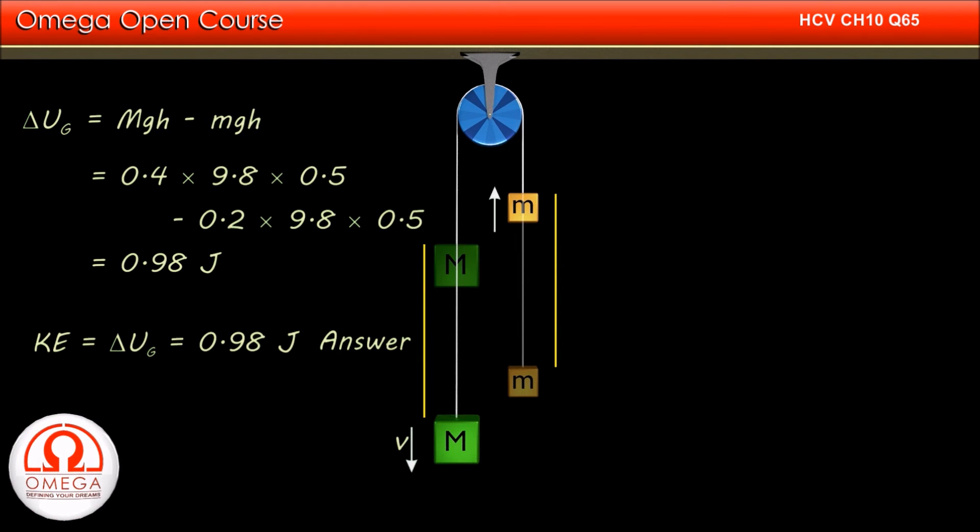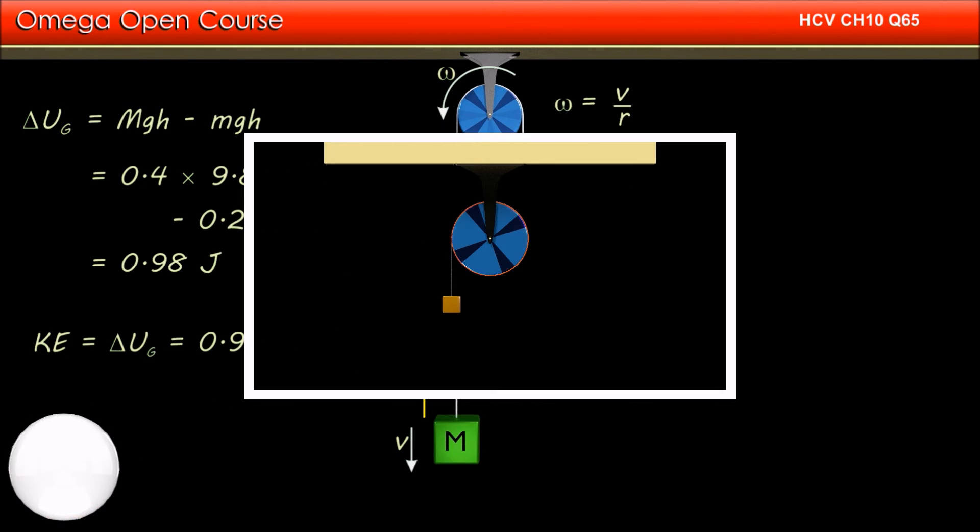Let the speed of the blocks at this instant be V. Since the radius of the pulley is R, its angular speed at this instant is V by R. If you do not know how to write the relation between angular speed and linear speed, watch our video explaining this relation. The link for the video is shown on the screen and given in the descriptions below.